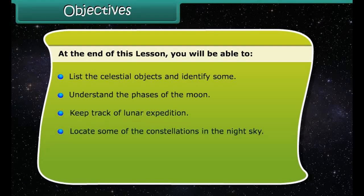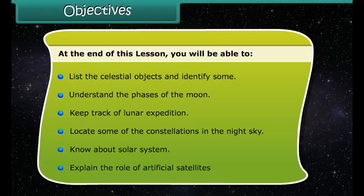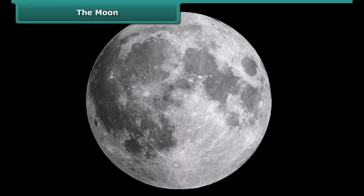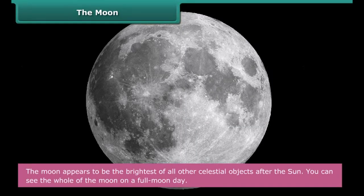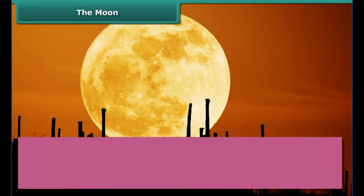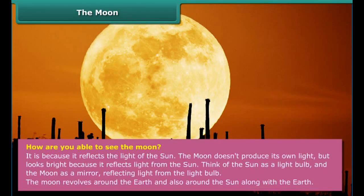At the end of this lesson, you'll be able to: list the celestial objects and identify some; understand the phases of the Moon; keep track of lunar expeditions; locate some of the constellations in the night sky; know about the solar system; and explain the role of artificial satellites.